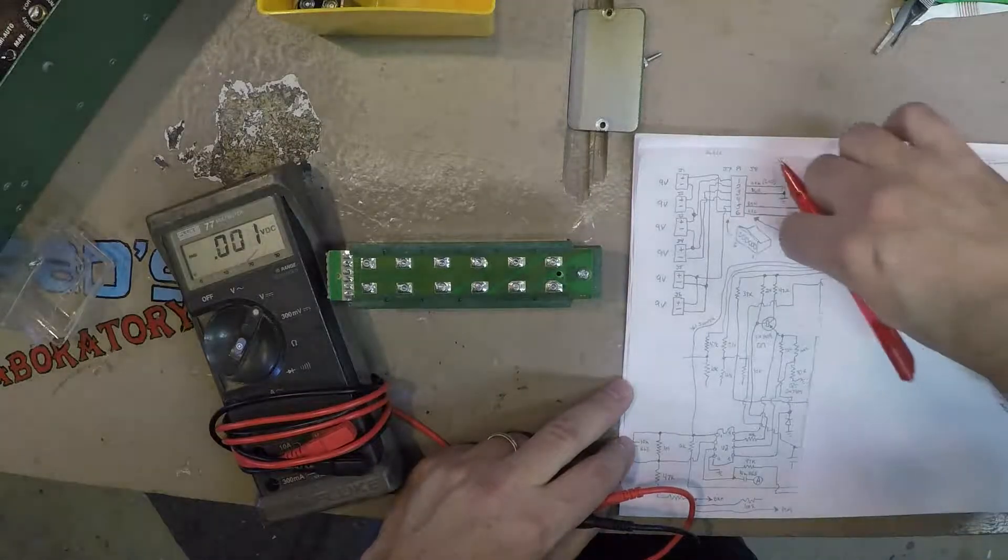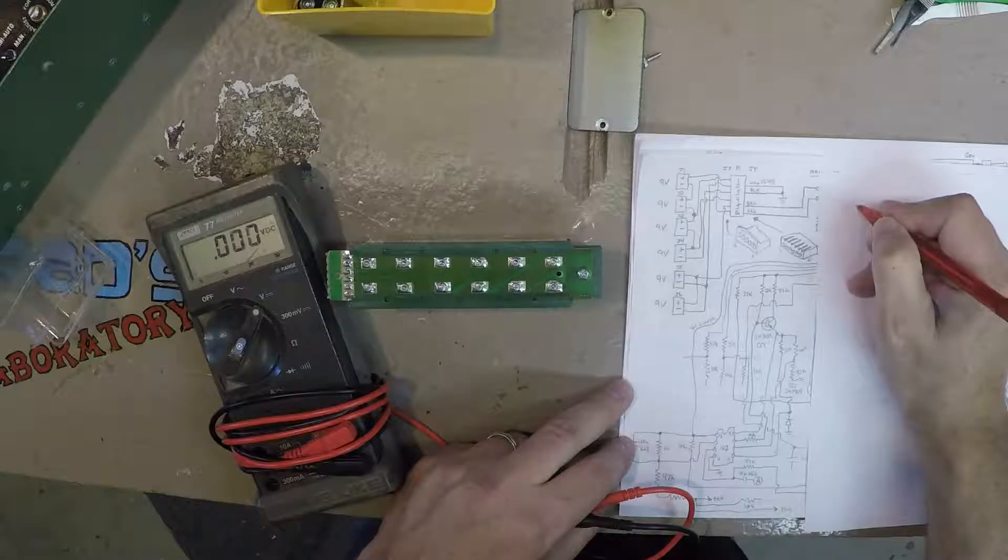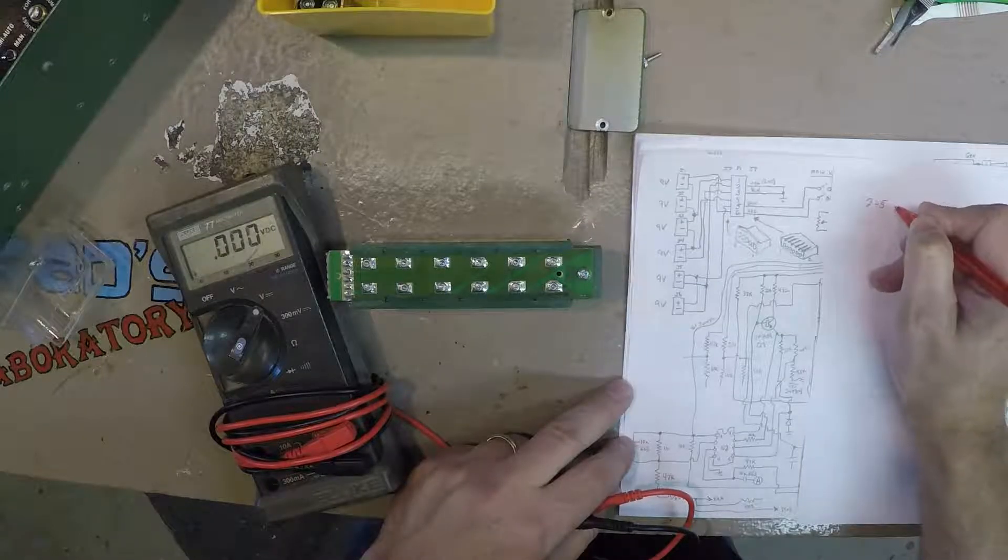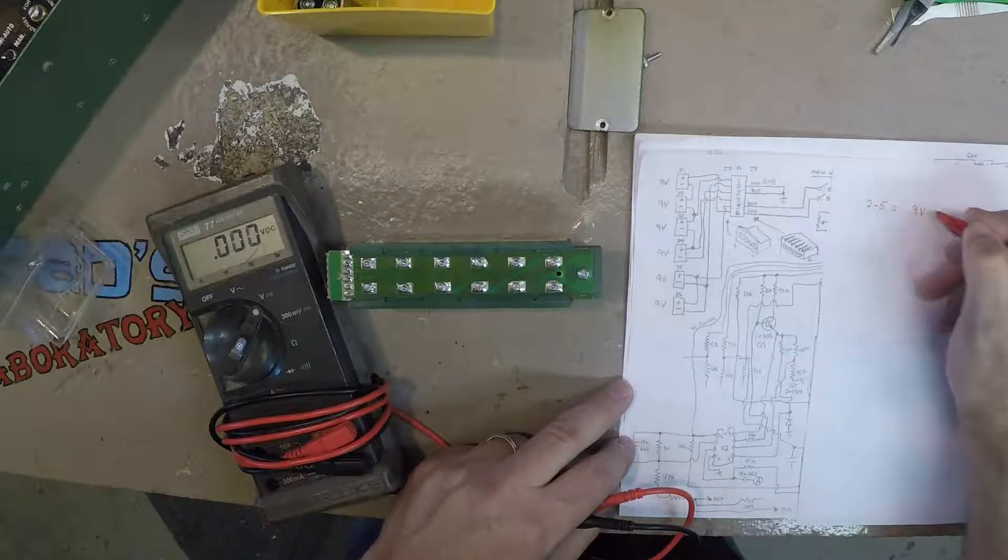So, write that down. 2 to 5 equals 9 volts.